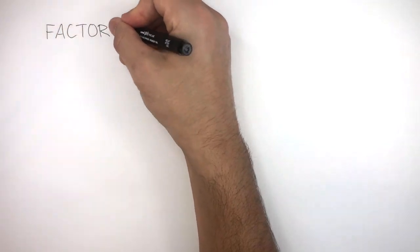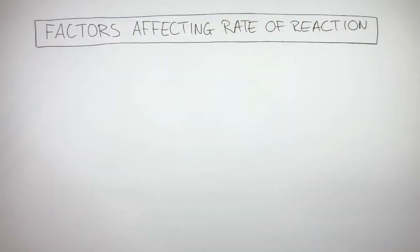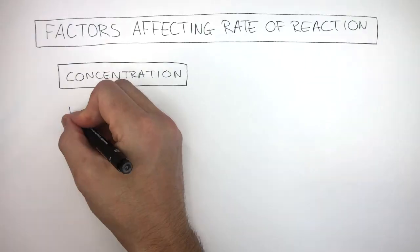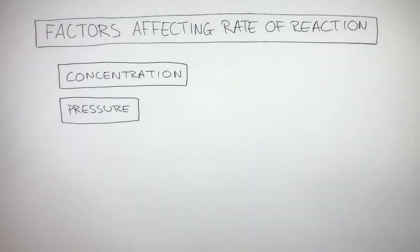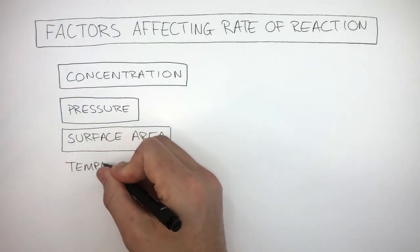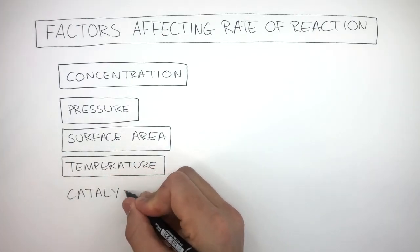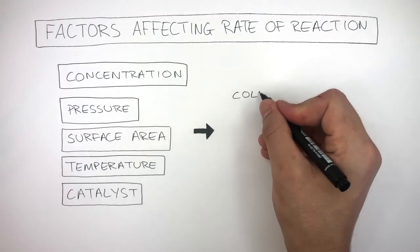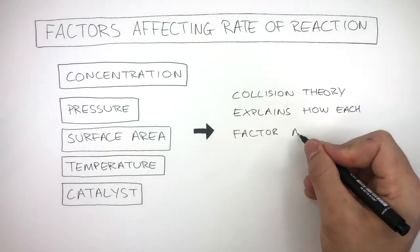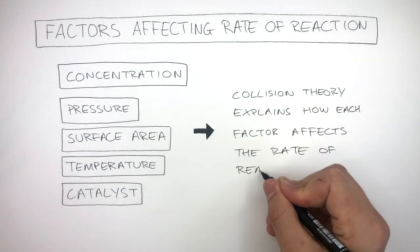Factors affecting the rate of reaction are concentration, pressure, surface area, temperature, and catalysts. The collision theory explains how each factor affects the rate of reaction.